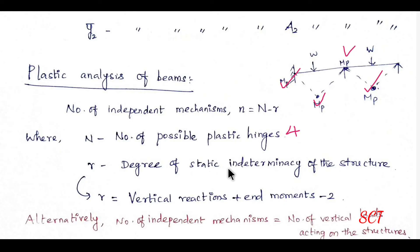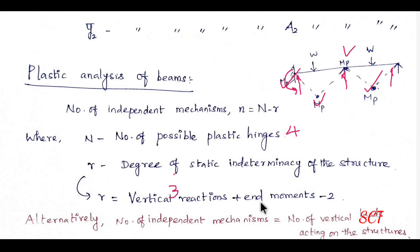The degree of static indeterminacy R is calculated from the vertical reactions and end moments. There are 3 vertical reactions and 1 end moment, giving R = 3 + 1 = 4. Wait — the formula gives R = 2, so capital N = 4, small n = 4 − 2 = 2. Therefore, there are 2 independent mechanisms.